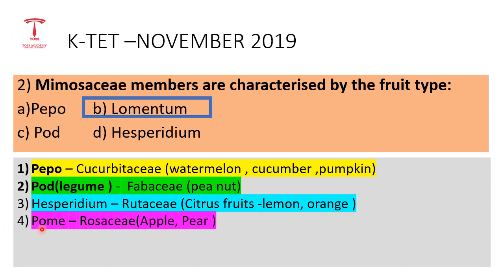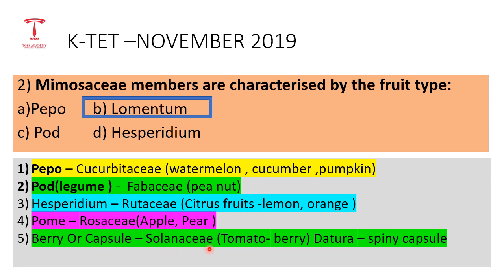Pome is the fruit type of the Roseaceae family — examples include apple and pear. For the Solanaceae family, the characteristic fruit types are berry or capsule. Tomato is an example of a Solanaceae plant that produces a berry.